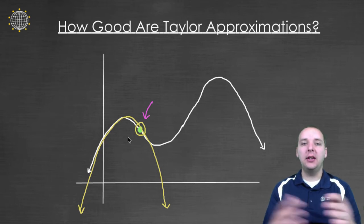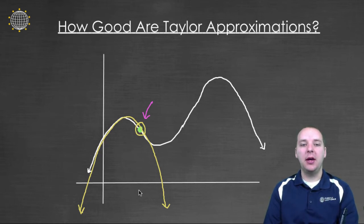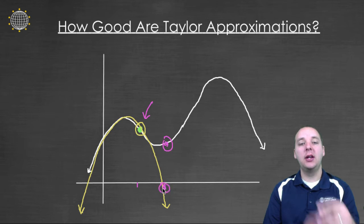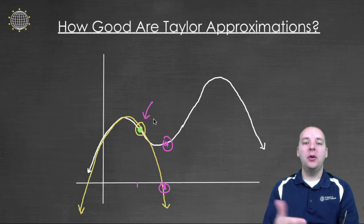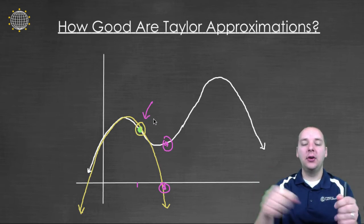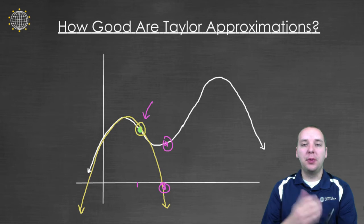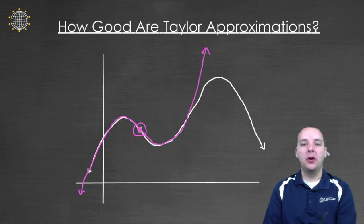But even quadratics will go astray if you dwindle too far, in this case, look to the right. Once you go too far to the right, here's the curve's y value, here's the quadratic's y value. It separates as well. If you choose a large enough polynomial, it'll bend and turn to approximate this guy better for longer.